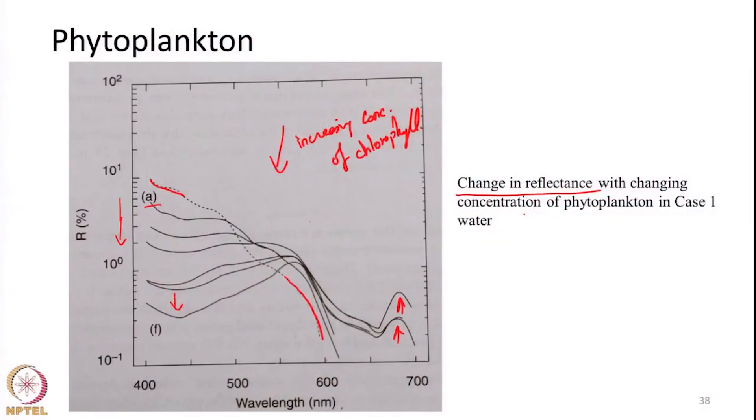As a summary for this particular lecture, we have seen a general introduction to the spectral reflectance properties of water and the different factors that influence them. We discussed the influence of vegetation on the reflectance. In the next class we will further discuss the other factors which influence the spectral reflectance nature of water. Thank you very much.